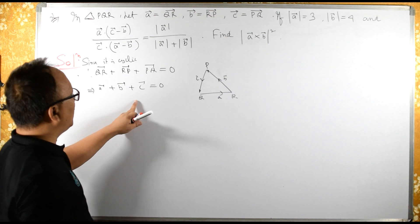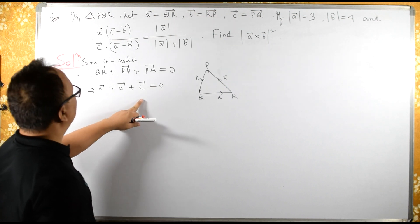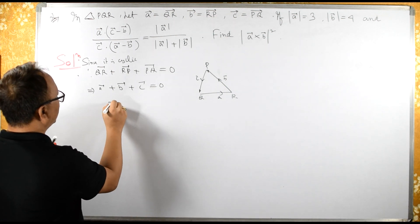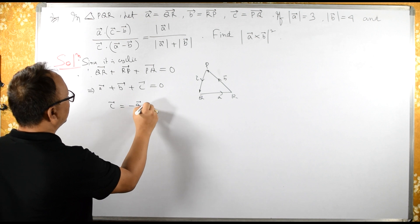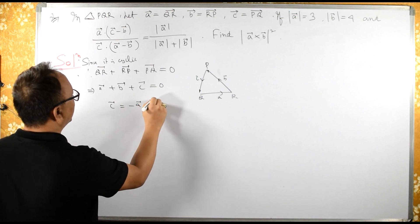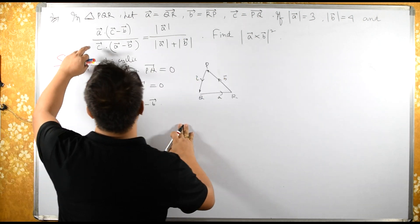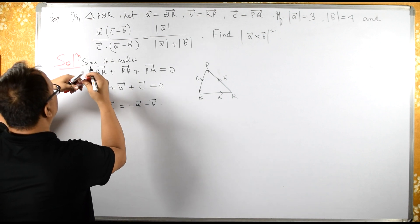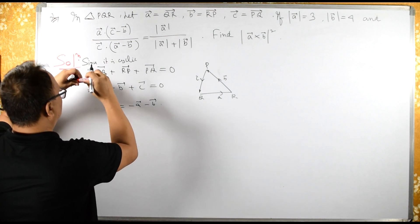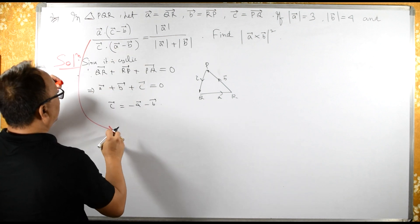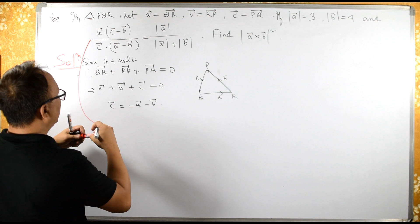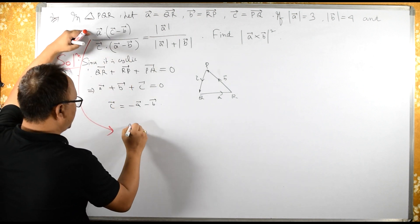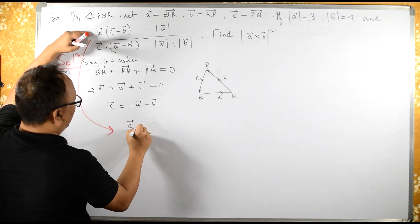Now let us try to find C. Therefore, vector C equals minus A minus B. Now let us substitute this value over here — instead of C, let us substitute.